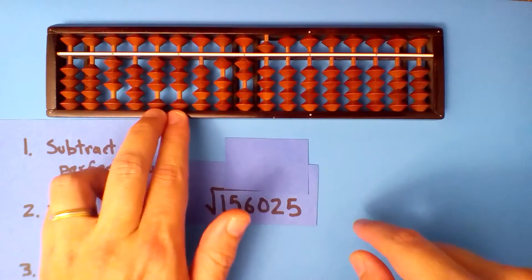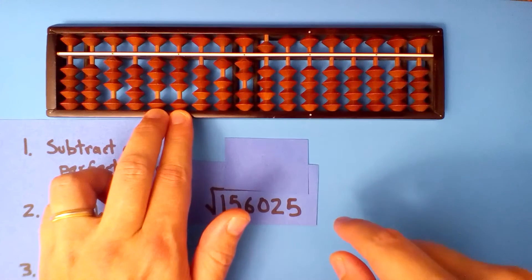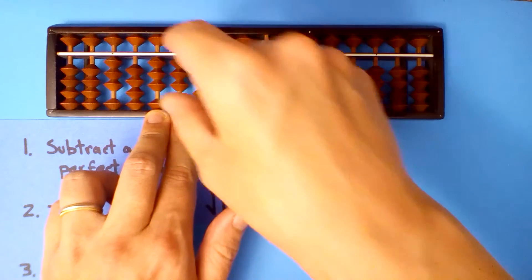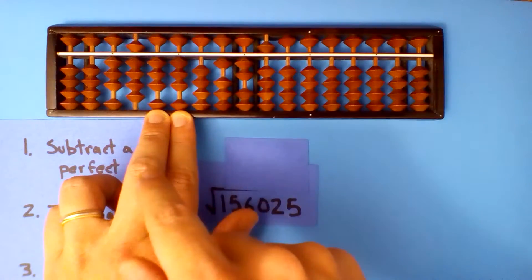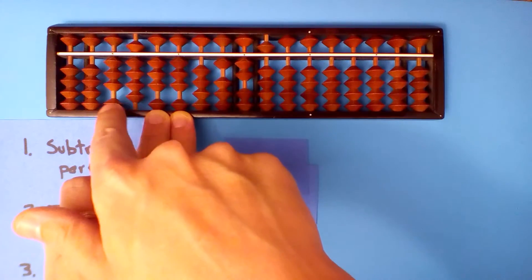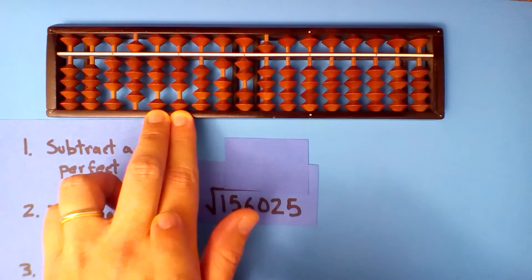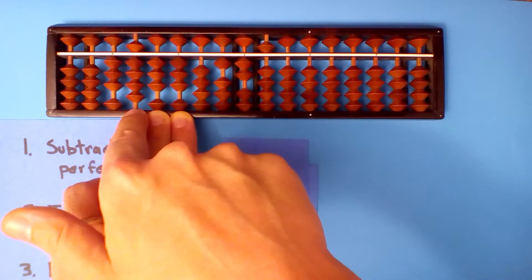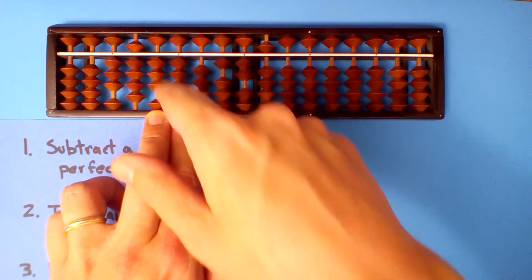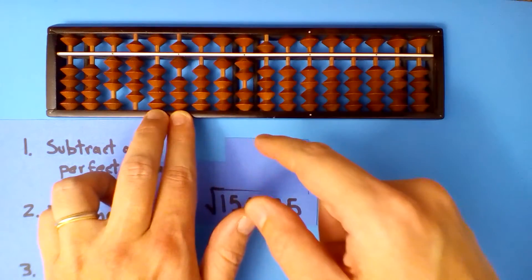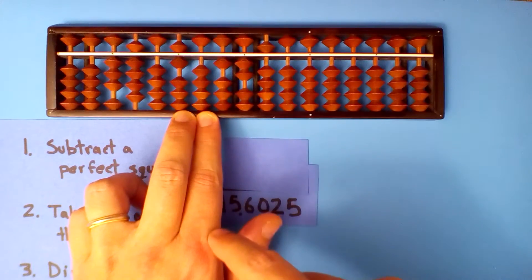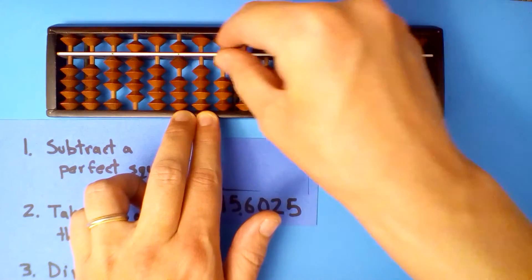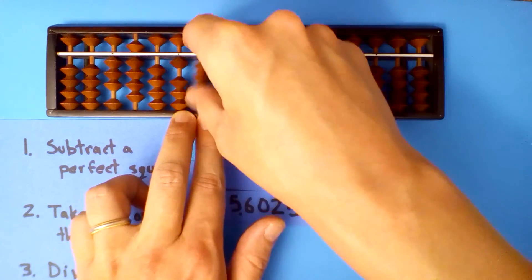Divide this number into this one. Three goes into 33 eleven times, but nine will be enough. Three point nine goes into 33 nine times. So let's multiply and subtract. Nine times three is twenty-seven. Nine times nine is eighty-one — take half of that — forty point five.